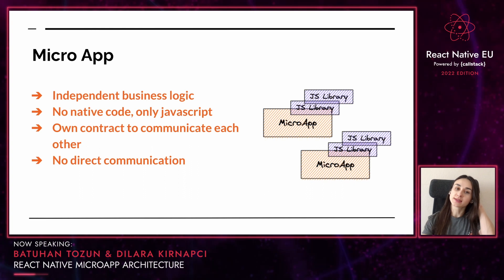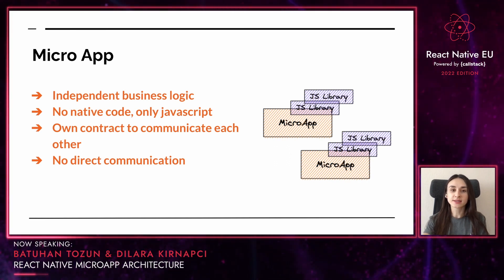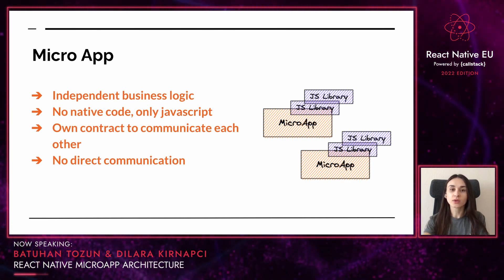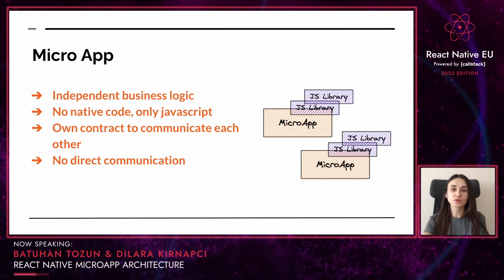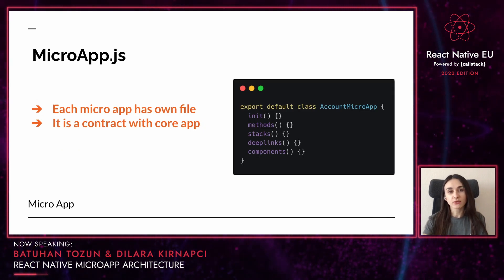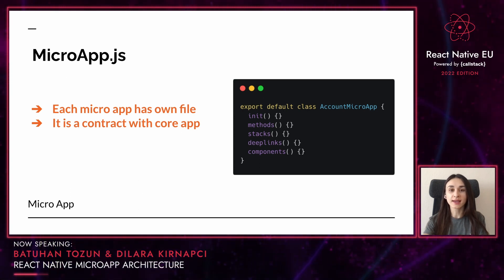If we talk about the details of microapps, each microapp application has its own independent business logic. You can create screens, images, API calls, utility methods, stacks, or whatever you want from a microapp file. Microapp applications have no native code — they contain only JavaScript parts. They have no direct data communication; they communicate through their own contract file via the core application. Each microapp has a microapp.js file, which can be called the contract of the microapp. The microapp exports its specific things like methods, stacks, deep links, and components from this file. It communicates through the core application by this file with other microapps.